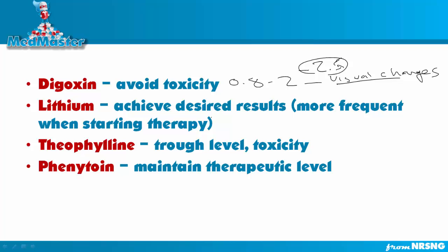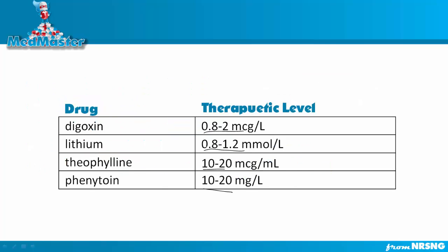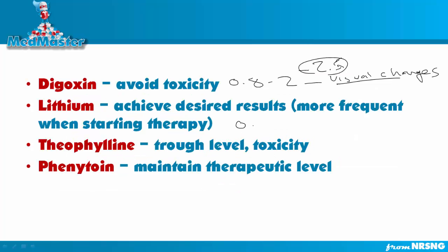With lithium, the main reason we're monitoring it is to achieve the desired therapeutic results. The level is 0.8 to 1.2, and it will be checked more frequently when starting therapy. Once the desired result is achieved, we decrease the frequency. It can also be used to ensure patient compliance, as patients taking lithium are a population that very frequently can be non-compliant with their medications.